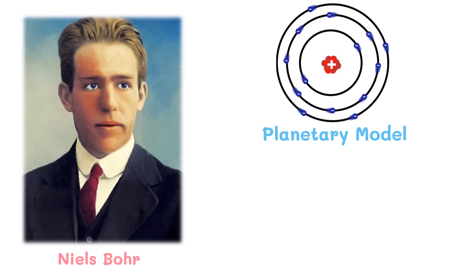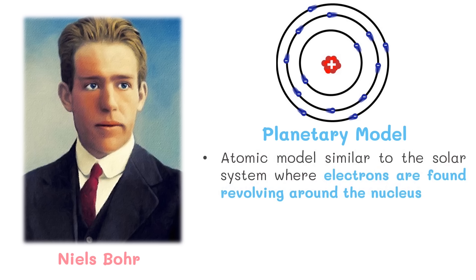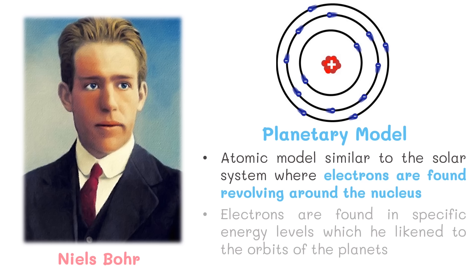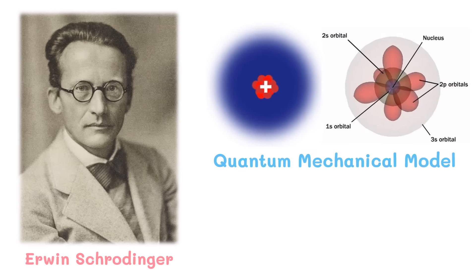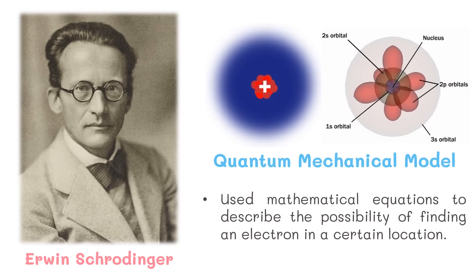Niels Bohr proposed an atomic model similar to the solar system, where electrons are found revolving around the nucleus in specific energy levels. Electrons can move from one energy level to another by absorbing or releasing energy. Austrian physicist Erwin Schrödinger made a refinement of Bohr's atomic model, using mathematical equations to describe the possibility of finding an electron in a certain location. This model uses electron clouds as the probable position of electrons — like an electric fan with spinning blades. This is known as the quantum mechanical model of the atom.